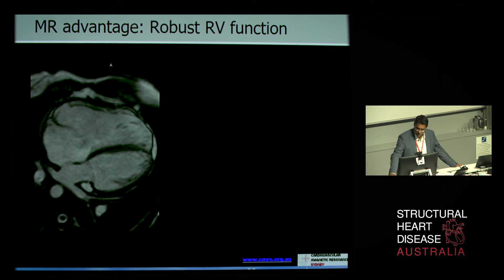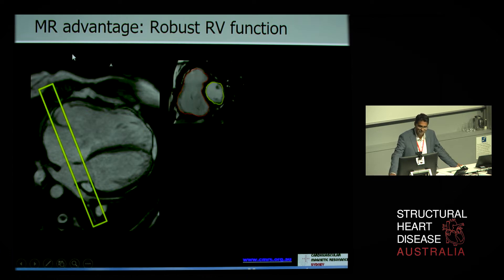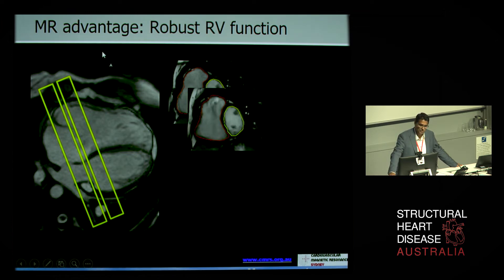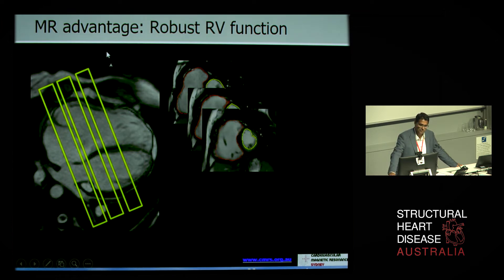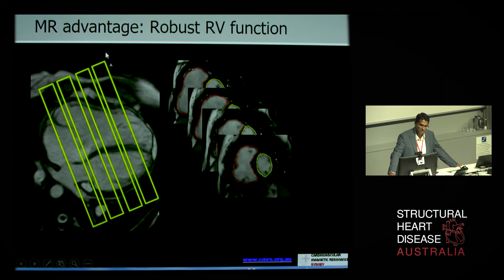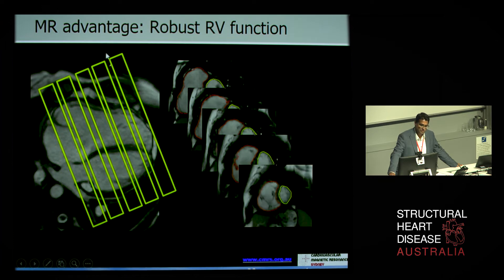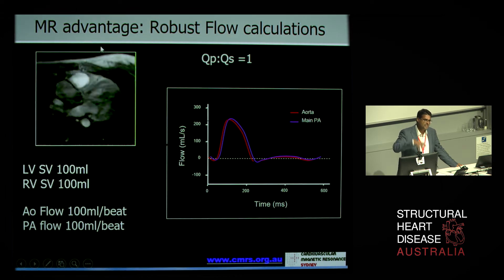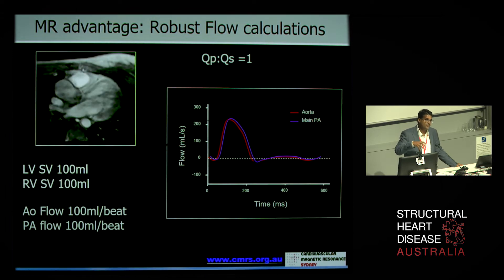The hallmarks of the RV are going to be the sequential nature of being able to slice through the right and left ventricles and demonstrate good function. Through this talk it's going to be the volumes through the right and left ventricle, plus appreciating the physiology — so the phase contrast imaging.